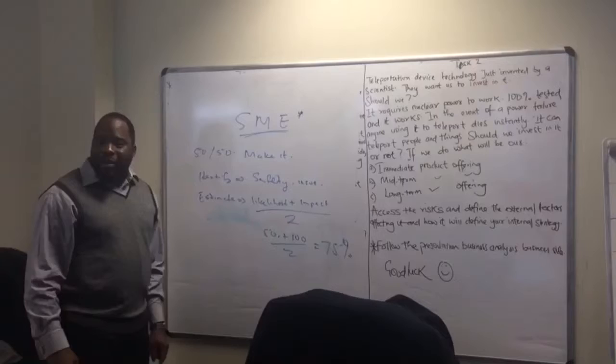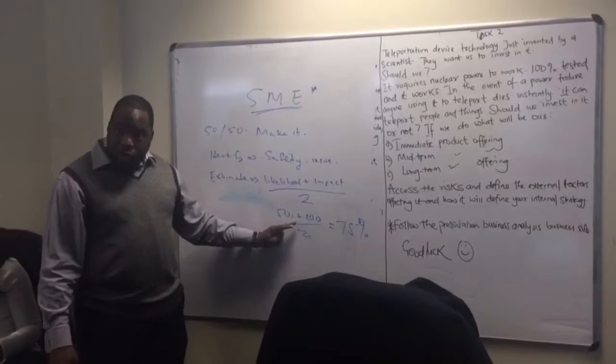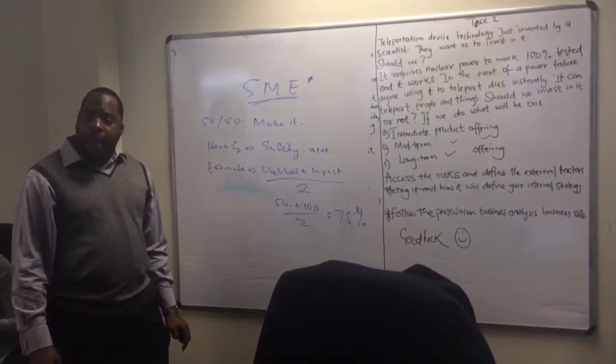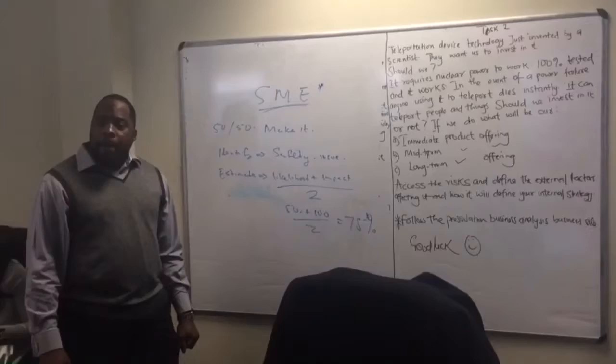So 50 plus 100, likelihood plus impact. I understand that, I just don't understand why it's impact. Because I would have thought that where impact is, it should be the other option. What other option? The 100% if we go back. So it should be 50. Let's do it again.